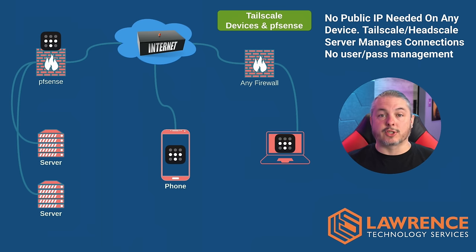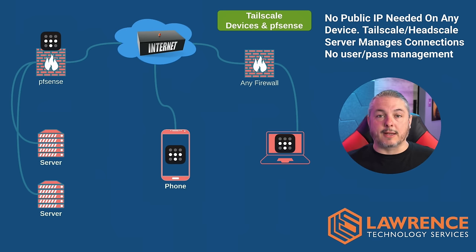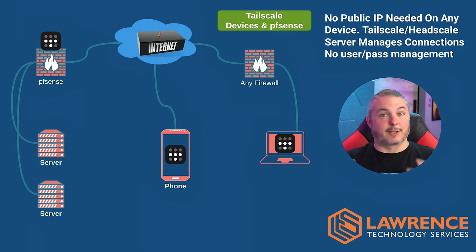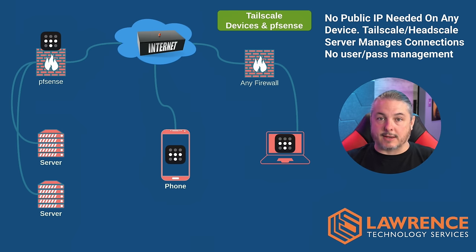The TailScale coordination server solves the public IP problem by figuring out where devices are because they beacon out to the TailScale server, which then coordinates getting them all connected. Even when they're behind double and triple NAT, it can do some really clever things, including getting around CGNAT. However, that requires all devices to talk to the TailScale coordination server, which is a private server run by TailScale as a company service.